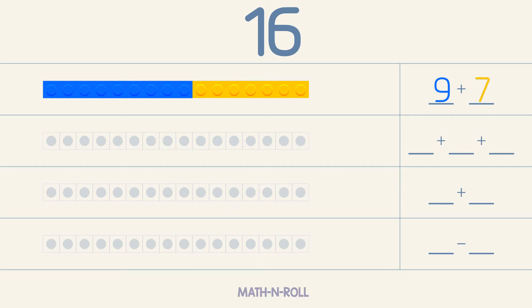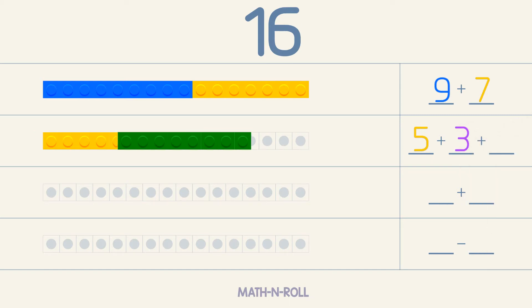Now make 16 by adding 3 different numbers. We can pick any number less than 16 for the first number. Let's do 5. Now we can add another number, 3. To make 16, we need 8 more pieces. So 5 plus 3 plus 8 equals 16.